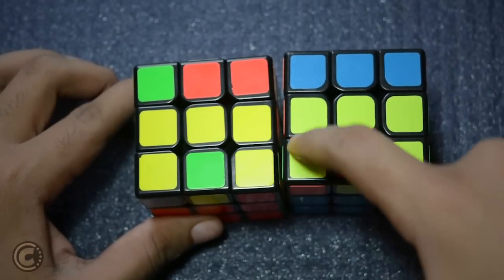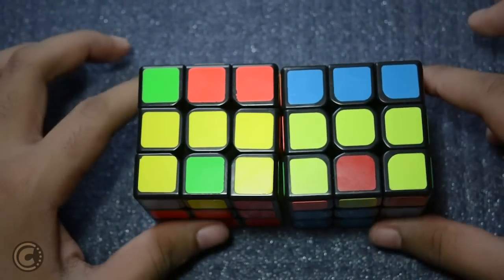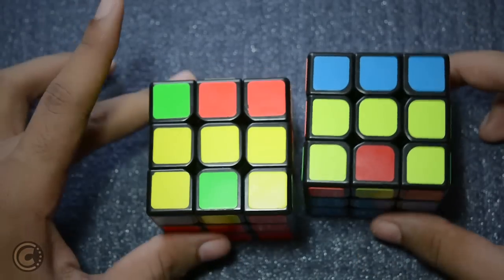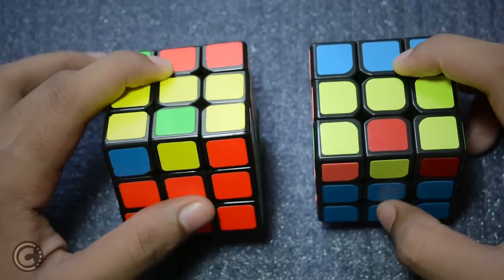You will have this C on the top whereas all the other stickers will be towards the side. Now there is a very easy way to recognize the C-OLL cases. Both of these edges will be facing towards you.